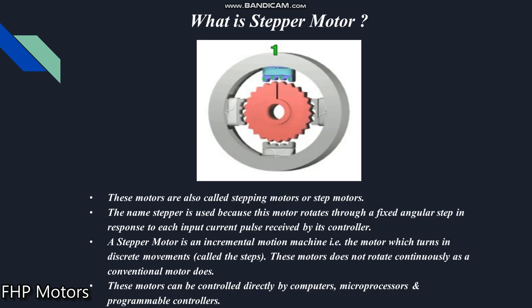First of all we will see what is a stepper motor. This motor is also known as the stepping motor or step motor, and its name 'stepper' is used because this motor rotates in fixed angular steps with respect to each input current pulse received by its controller. We can also call this motor an incremental motion machine — a motor which rotates in discrete movements or steps, and so does not rotate continuously as conventional motors do. These motors can be controlled directly by computers, microprocessors and programmable controllers.